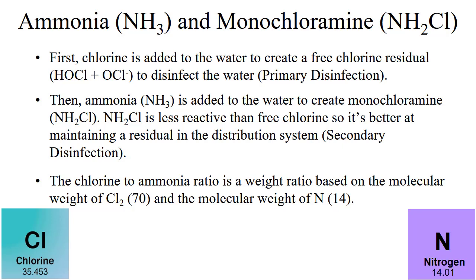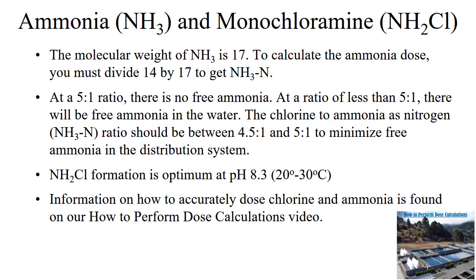The amount of ammonia fed at a plant is based on the chlorine-to-ammonia-as-nitrogen ratio. This ratio is based on the molecular weight of chlorine, Cl2, which is 70, and the molecular weight of nitrogen, which is 14. The molecular weight of ammonia is 17. To determine the nitrogen portion of ammonia, divide the molecular weight of nitrogen, 14, by the molecular weight of ammonia, 17, to get ammonia as nitrogen.